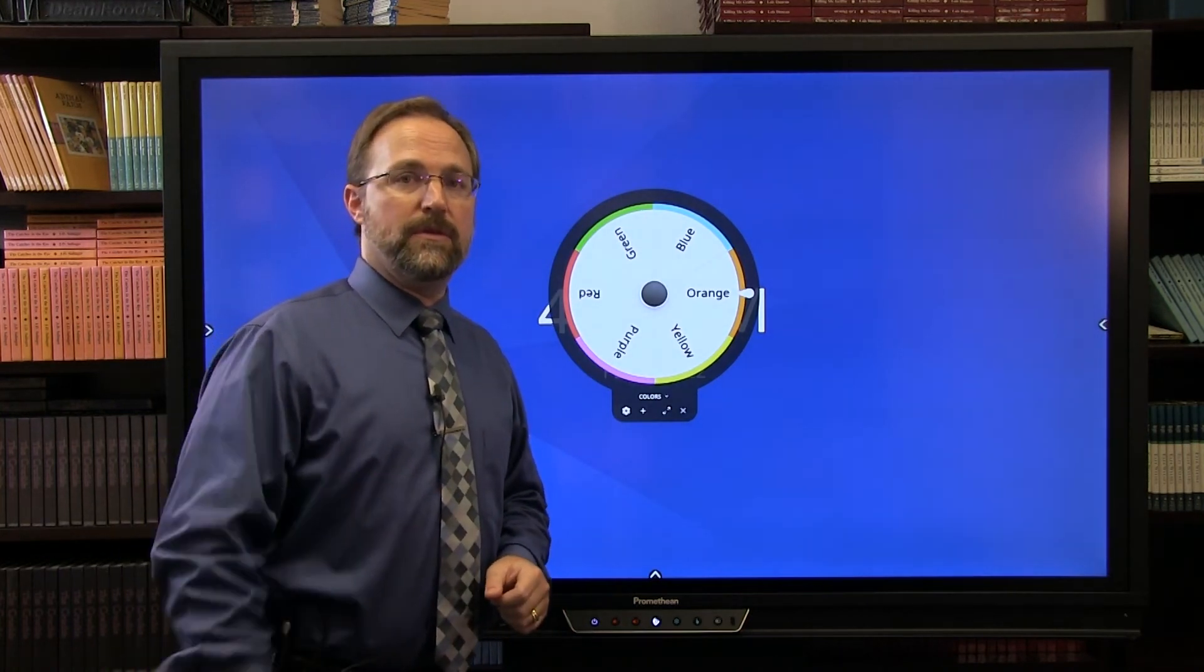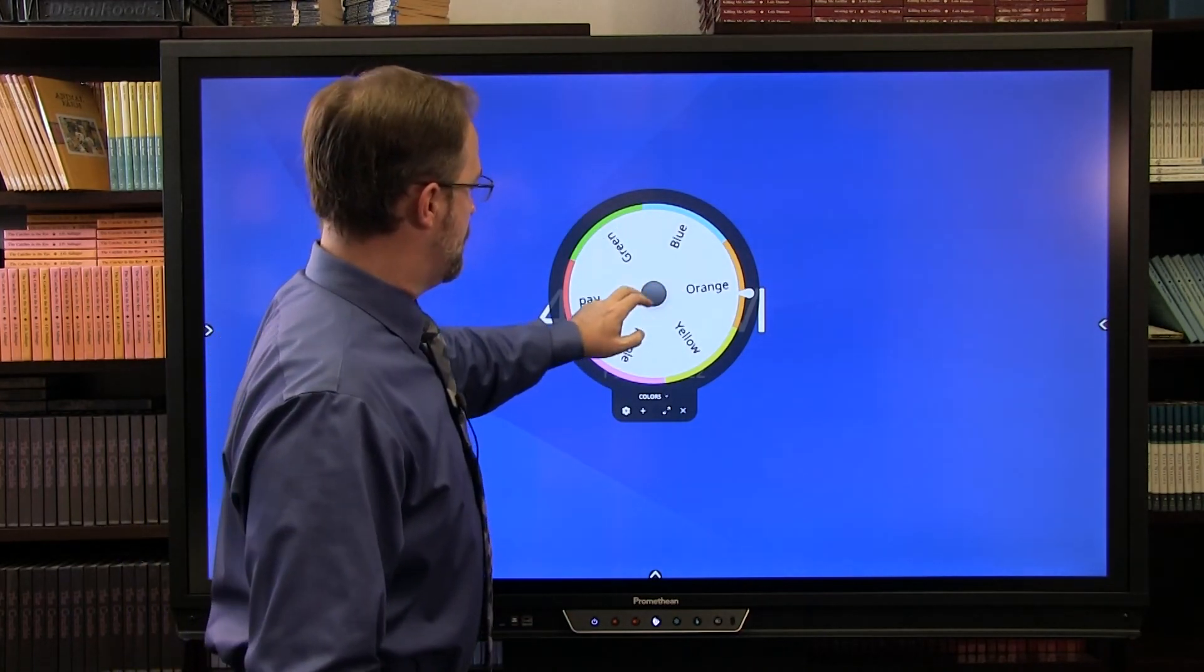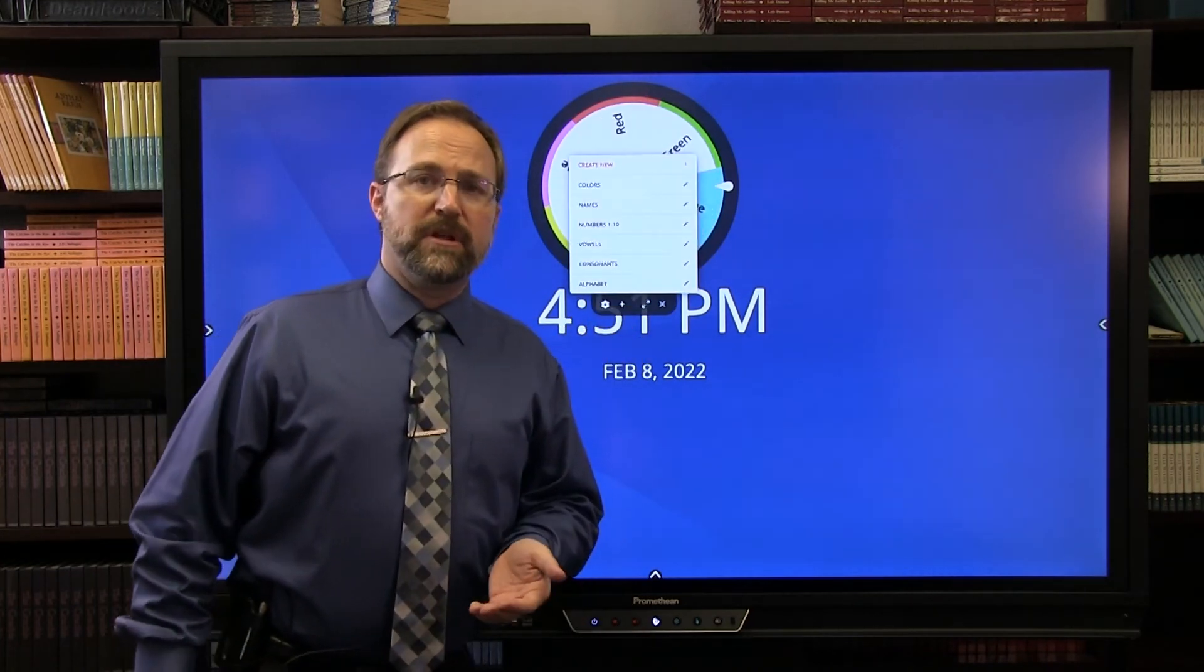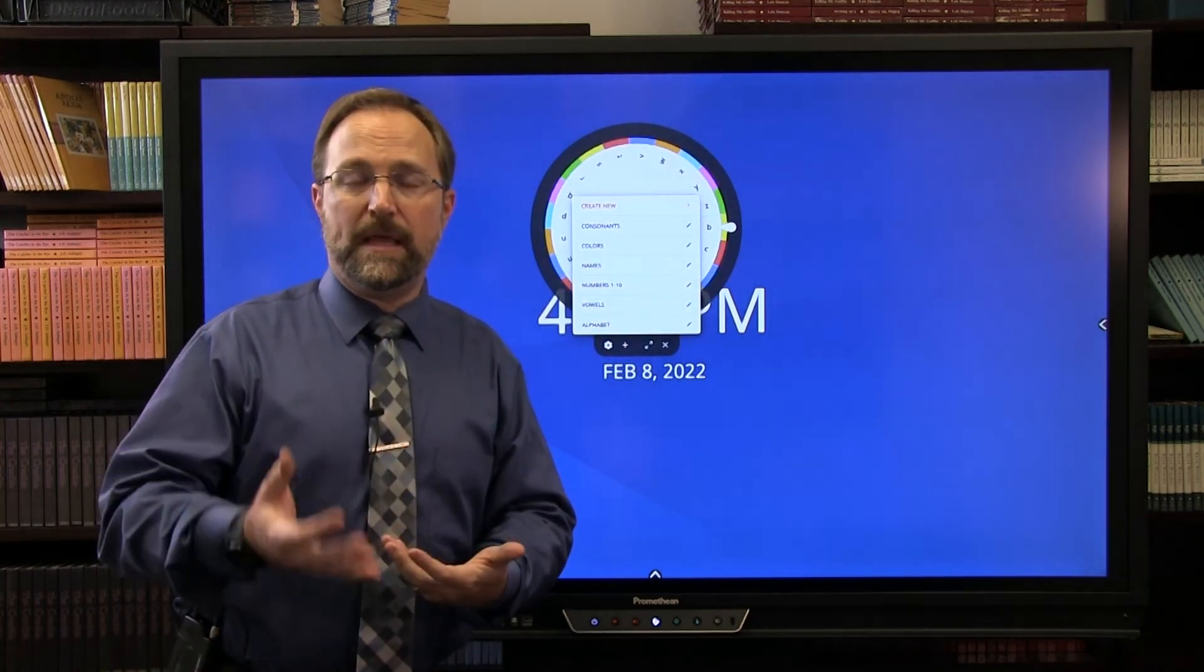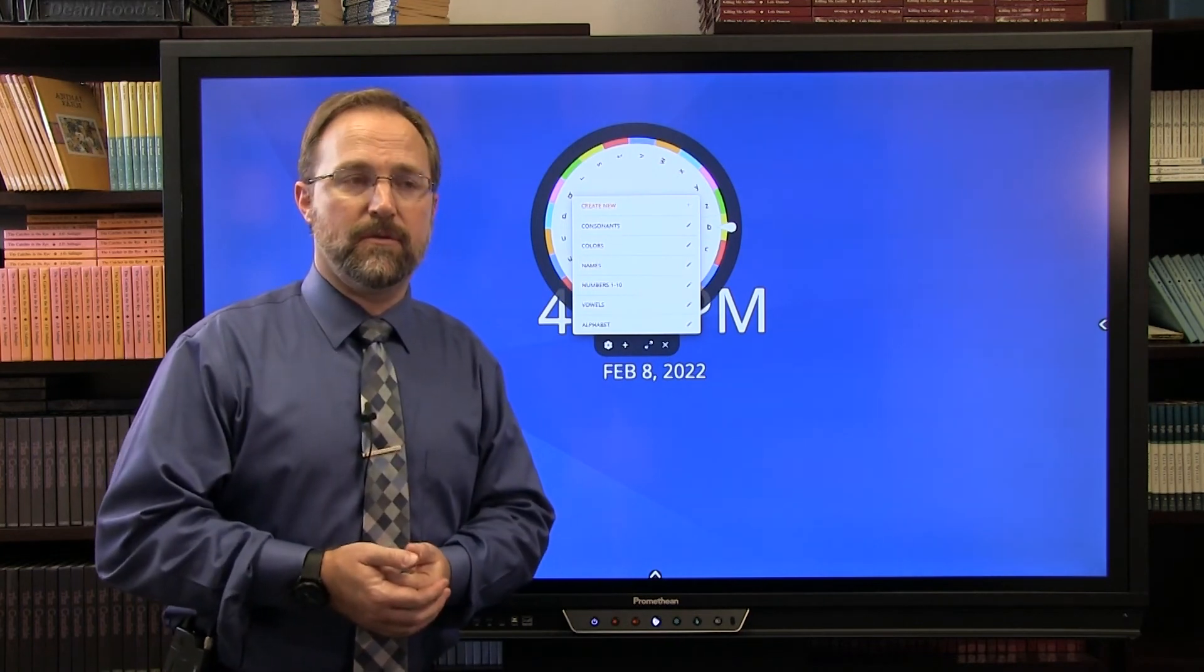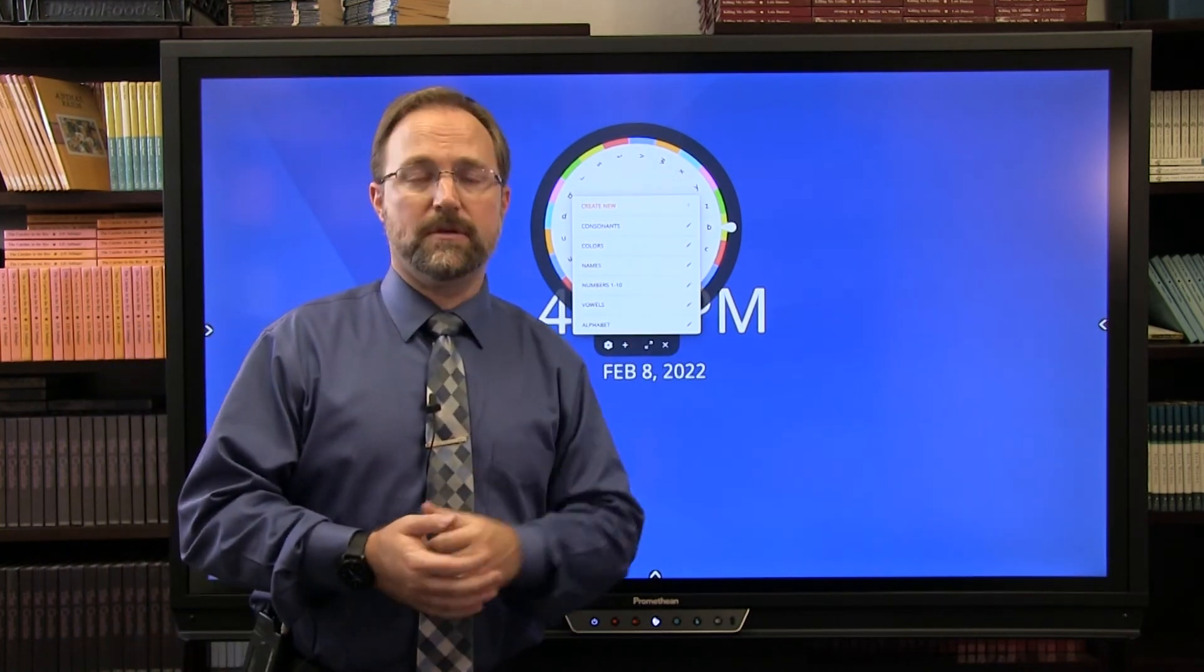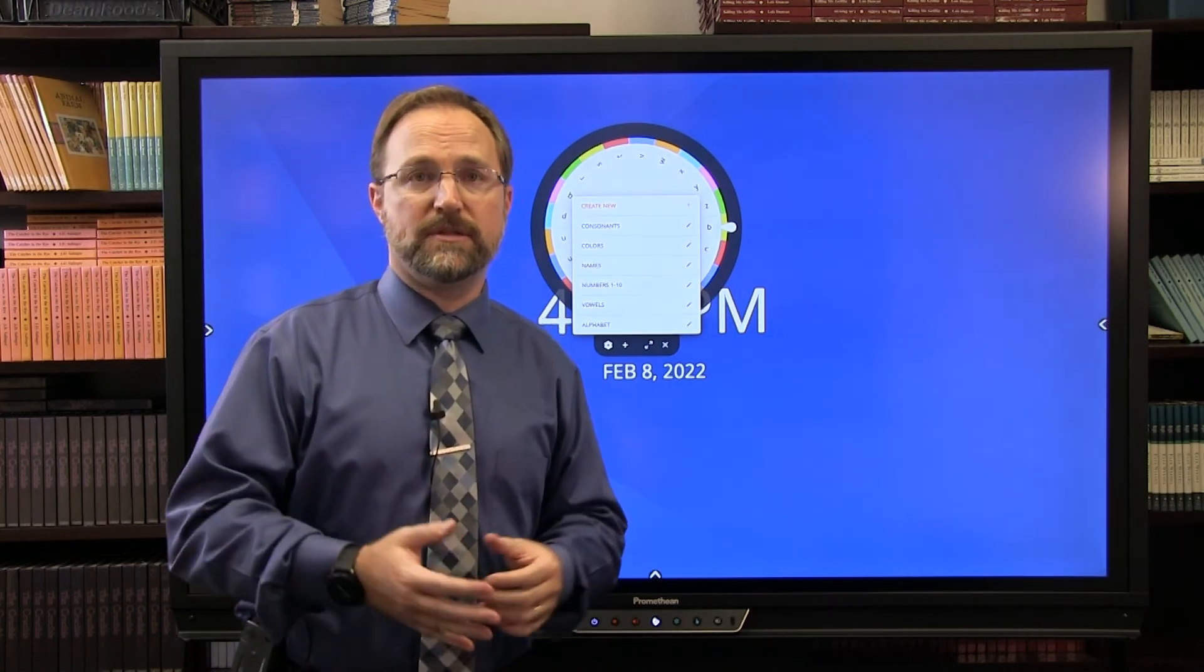Spinner as an app is a way that you can encourage some studying or some shout outs of answers. It already comes preloaded with a series of different items. You can edit these particular spinners to be anything that you'd like them to be. Whatever terms that you would like as it spins for creating definitions where you have the name and the student has to respond back with a definition. This is another way in which you can call on students where you can just spin this and have one through 30 and whatever number that falls on, that's that student that is going to be called on.